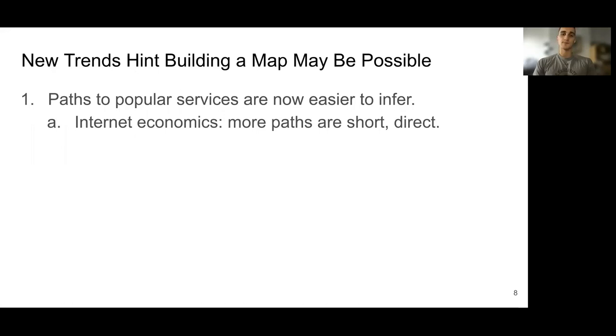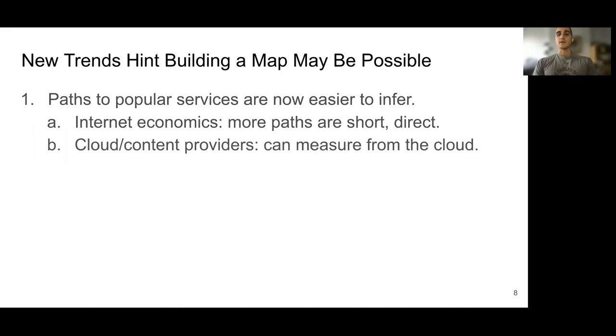Paths are also easier to infer due to the evolving role of cloud and content providers. We can measure from cloud VMs, allowing us to uncover many of those pesky peering links that were traditionally unmeasurable.